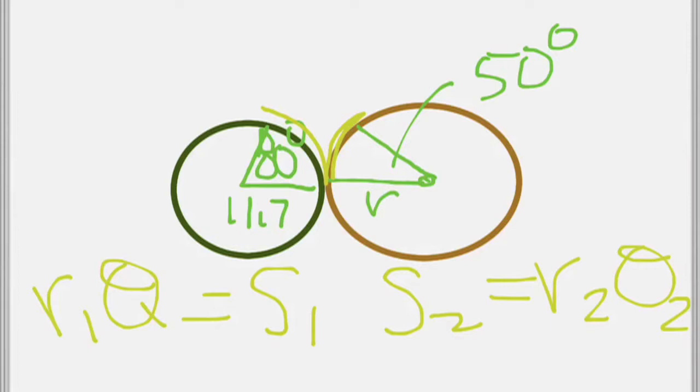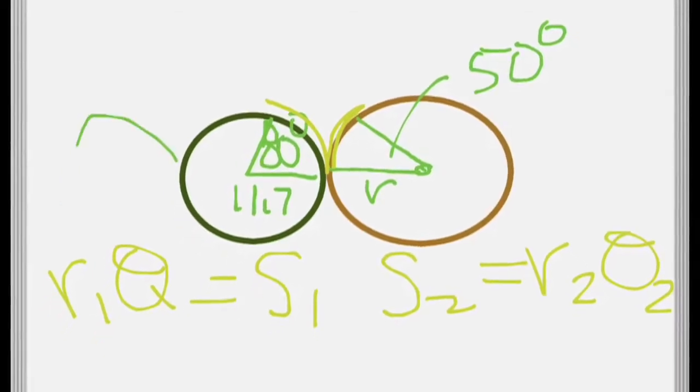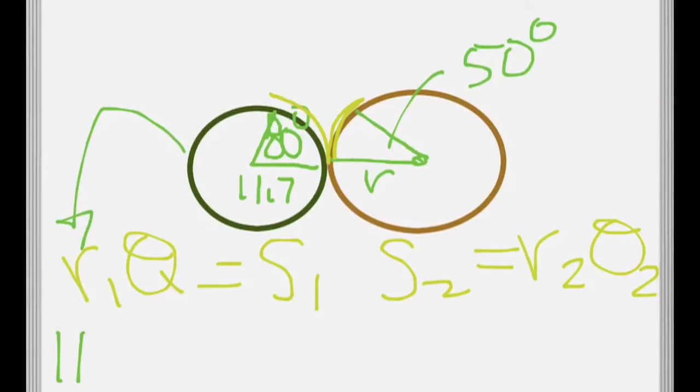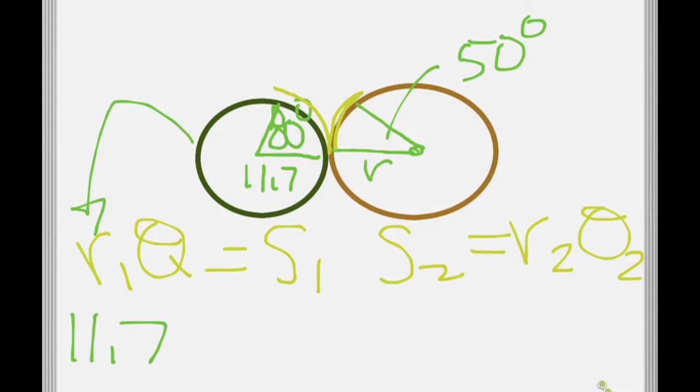So we were converting those degrees into radians. Because our S equals R theta only going to work for radians. So we go and we throw that up in there. We know that this has a radius of 11.7. And my degrees. No, I need that in radians. What was 80 in radians? 4 ninths pi.